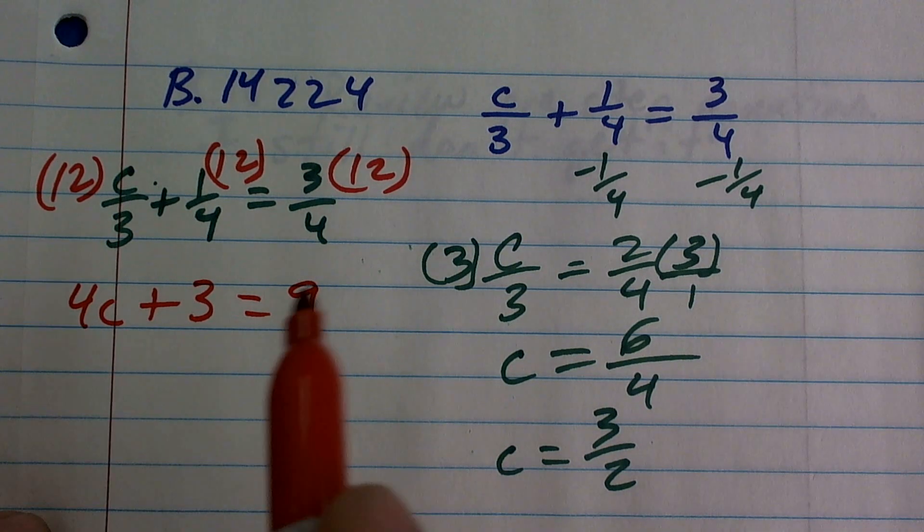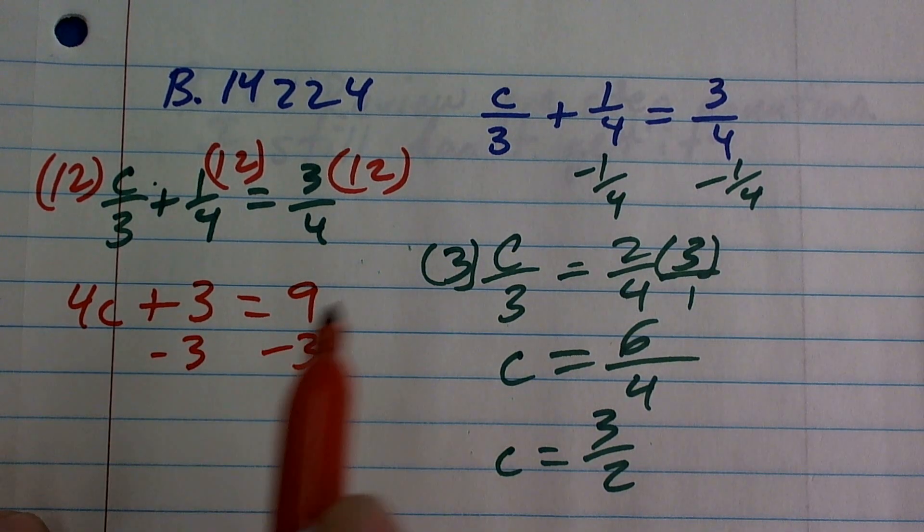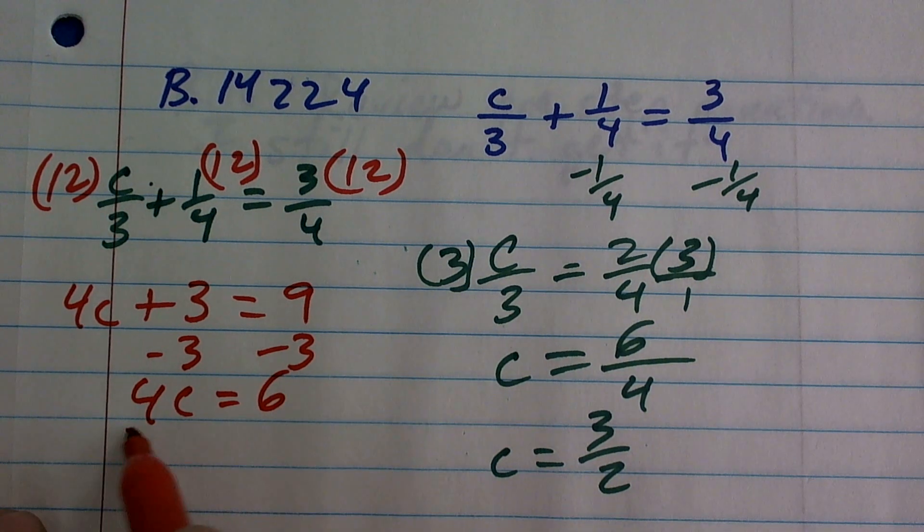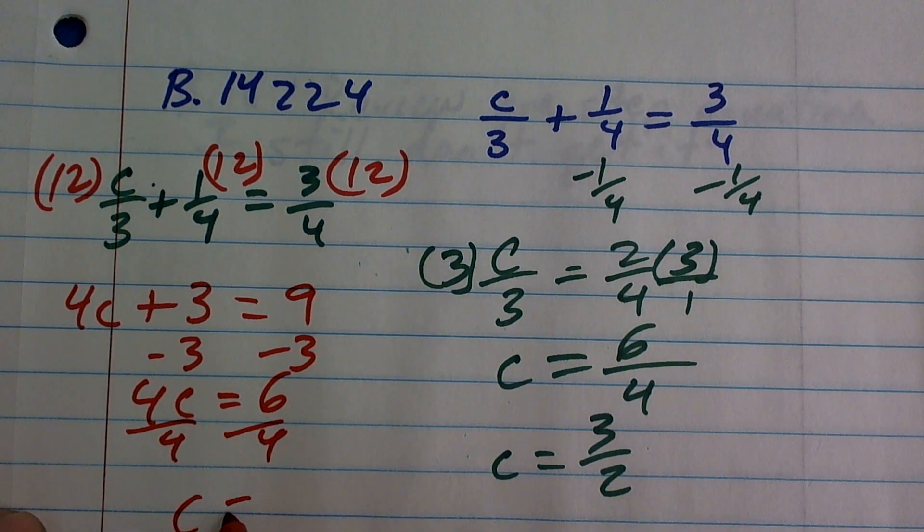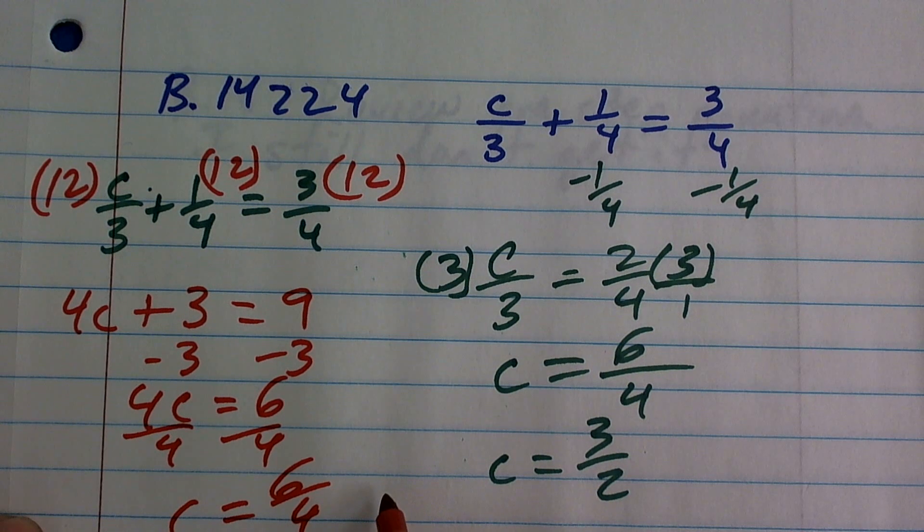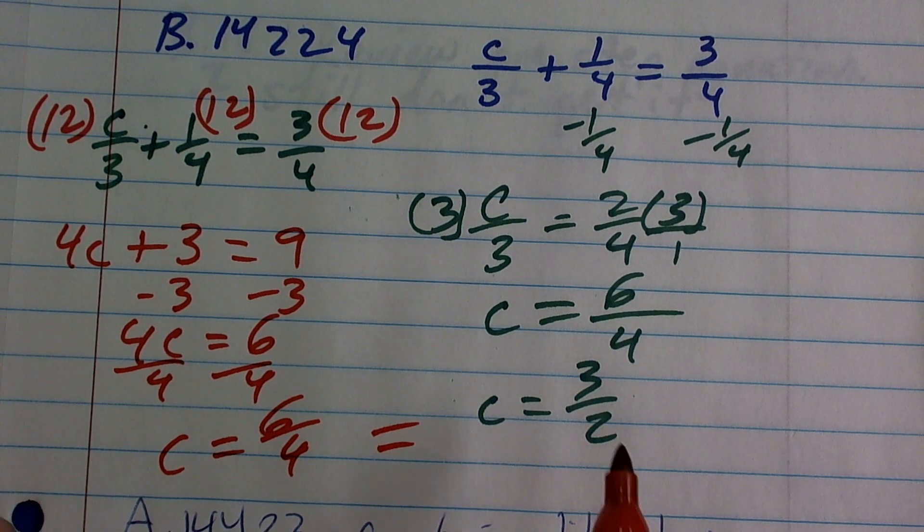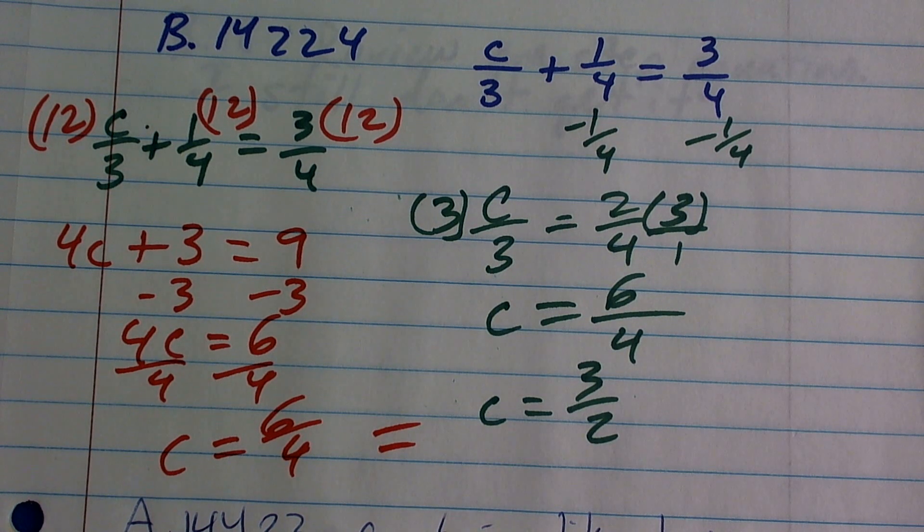Now, I can solve it using a two-step equation. Subtract 3, because we always undo addition and subtraction first, then divide by 4, which you can see is my exact same answer, 6 fourths, which reduces down to 3 halves. There you go.